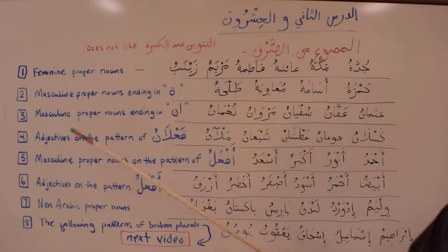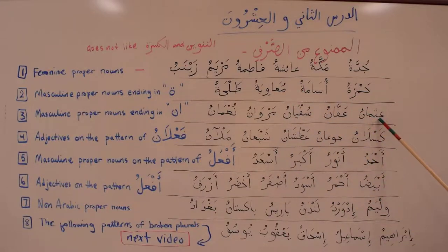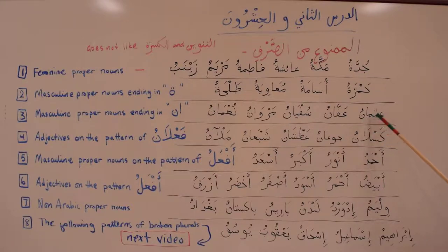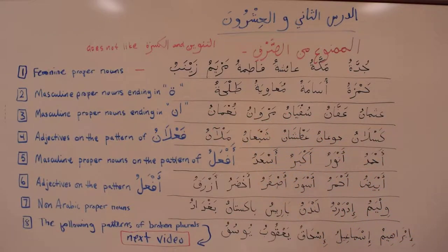Third on the list: masculine proper nouns ending in ان (Alif and Nun). For example, Uthman — it ends with Alif and Nun. All such masculine proper nouns that end with ان fall into this category.